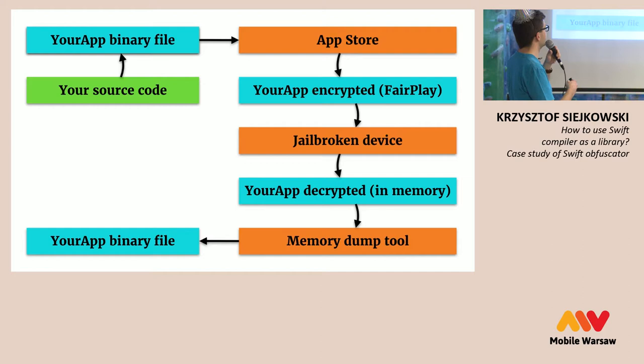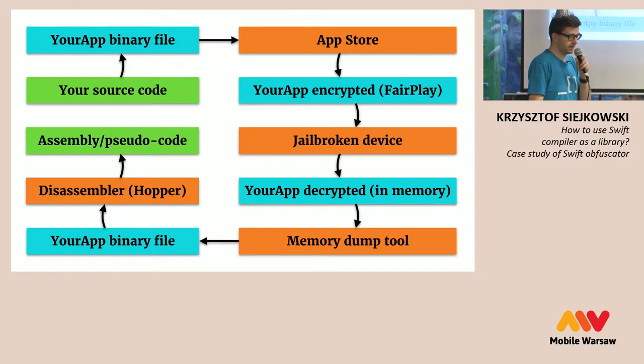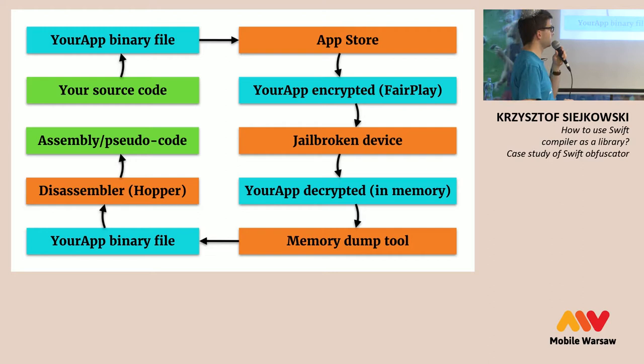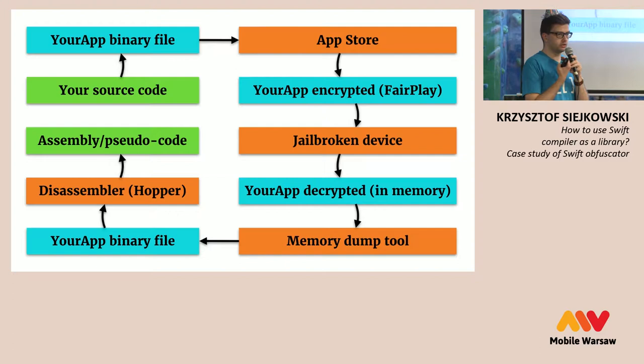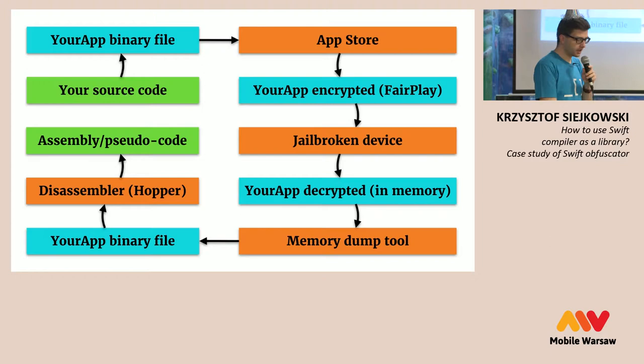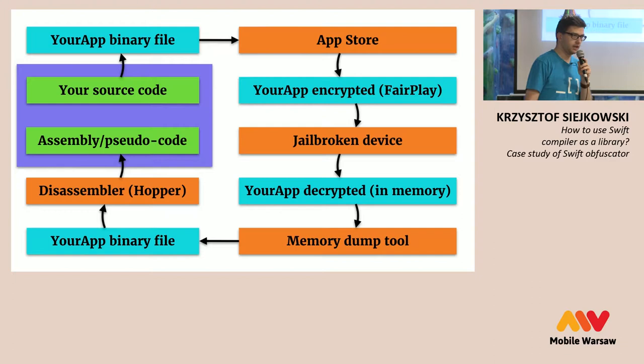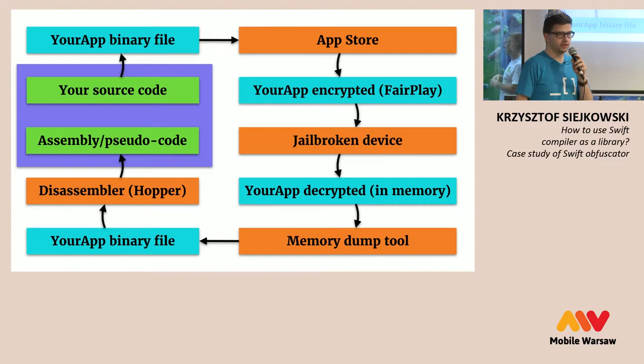Now you have the decrypted binary file, essentially the same as what Xcode produced. The attacker can then use a tool like Hopper — a disassembler — to turn the binary into assembly code or pseudocode. Hopper can give you pseudocode that expresses the same logic your app has, so a skilled attacker can read pretty much anything you've put into the app.